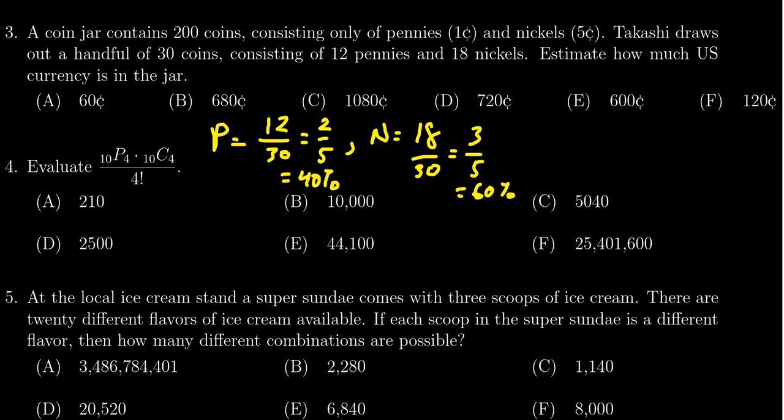So 40% of 200 is going to mean how many pennies we get, but we also are going to take 60% of 200 to get how many nickels. I'm going to times that by five because nickels are worth five cents and pennies are worth one cent.